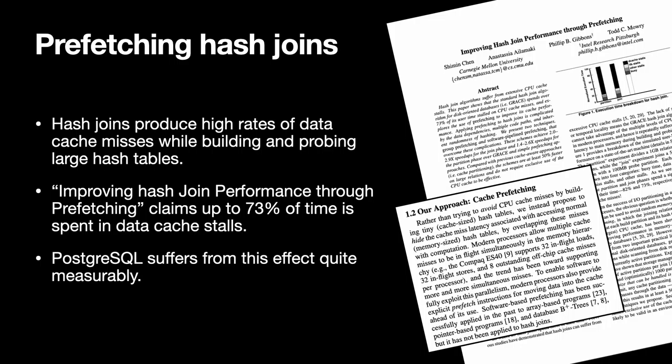Now I'm going to change gears and talk about memory. While I was working on parallel hash joins for Postgres, I read a whole bunch of papers about different aspects of that problem, and one caught my eye. It talks about how hash joins suffer from data cache misses. That's not that surprising when you think about what a hash join does — it's accessing memory in a pattern that the hardware prefetching systems can't predict. So unless the whole thing fits in some level of the cache hierarchy, you're going to have a load of cache misses. This paper investigates one way of dealing with that.